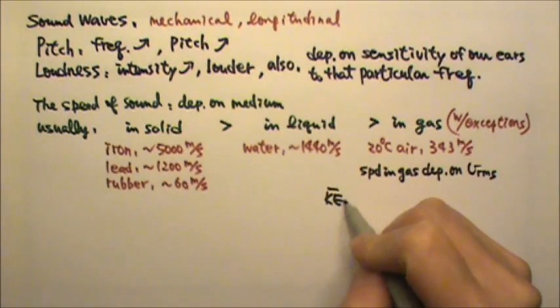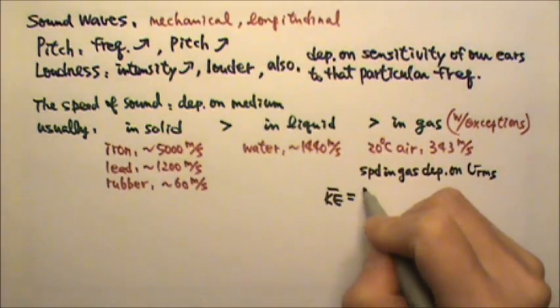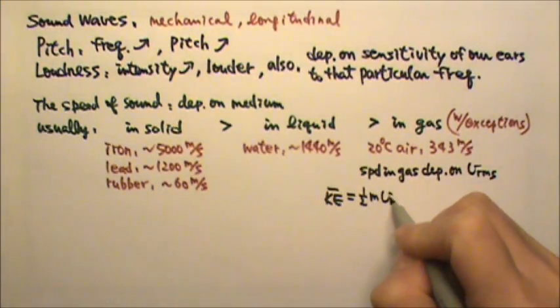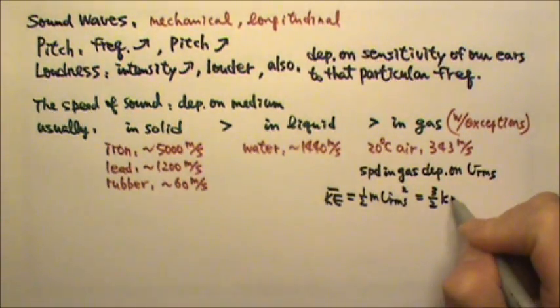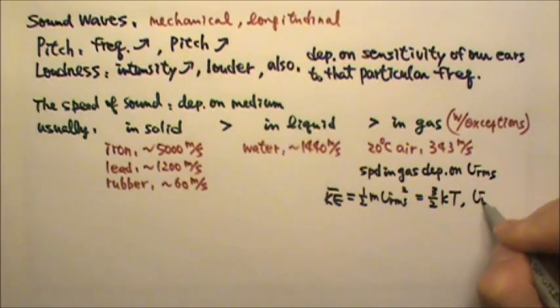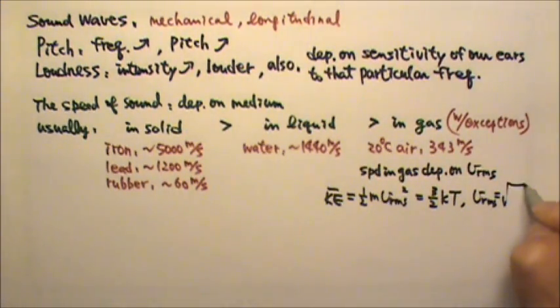the average translational kinetic energy is 1/2 m root mean square speed squared equals to 3/2 kT. If we solve for the root mean square speed, we'll get square root of 3kT divided by m.